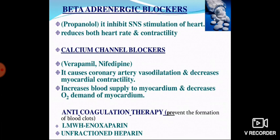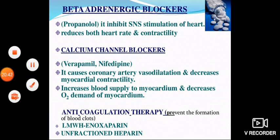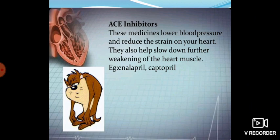Calcium channel blockers — such as verapamil or nifedipine — cause coronary artery vasodilation and decrease myocardial contractility, increasing blood supply to the myocardium and decreasing oxygen demand. Anticoagulation therapy is also administered to prevent the formation of blood clots. ACE inhibitors — for example, enalapril and captopril — lower blood pressure, reduce strain on the heart, and help slow further weakening of the heart muscles.